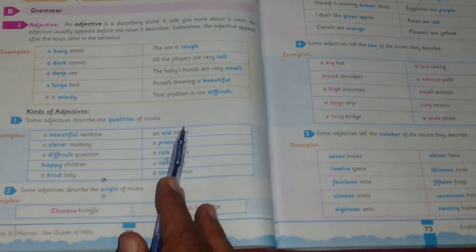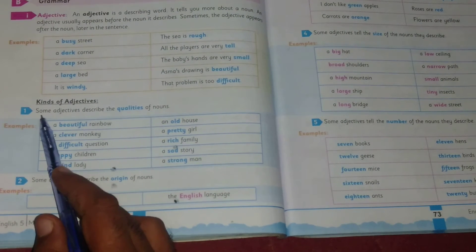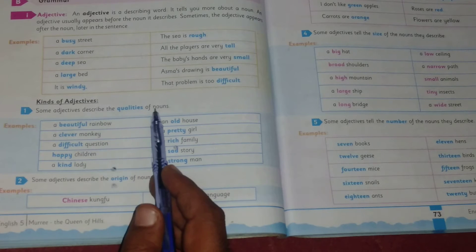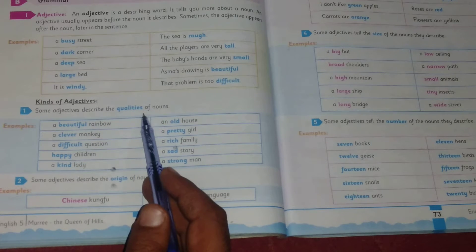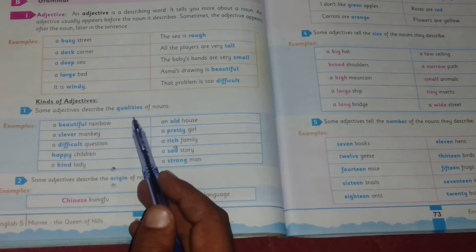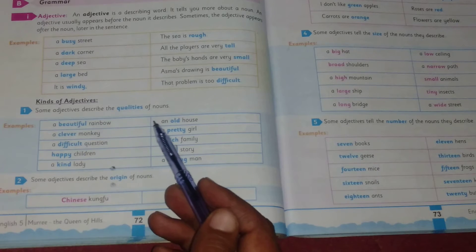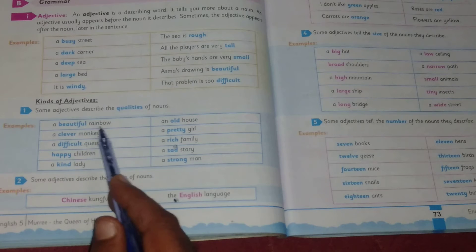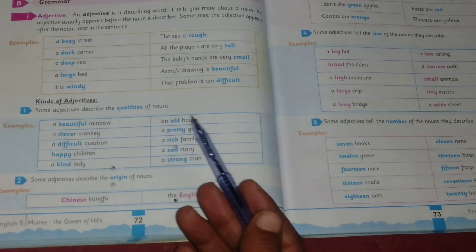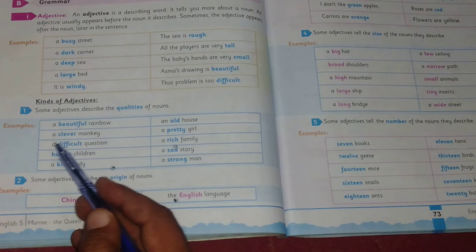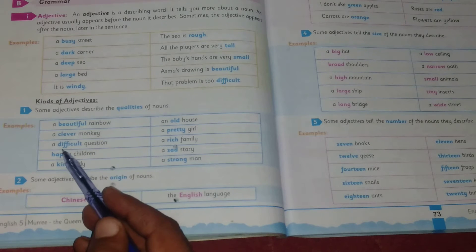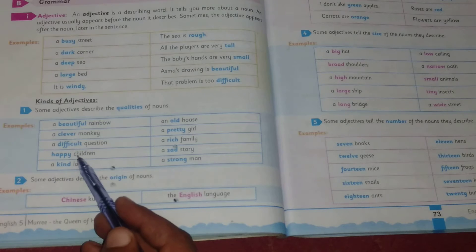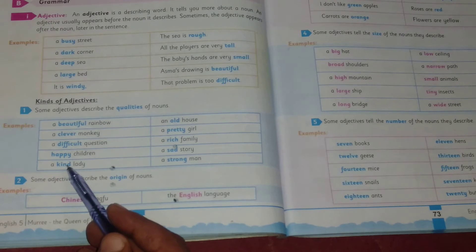Now, kinds of adjectives. Number one: some adjectives describe the qualities of nouns. First is adjective of quality. It describes the quality of a noun. Examples: a beautiful rainbow. How is the rainbow? A beautiful rainbow. A clever monkey, a difficult question. How is the question? Difficult. Happy children, a kind lady.